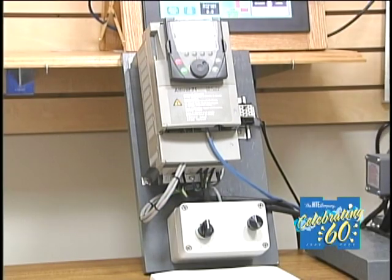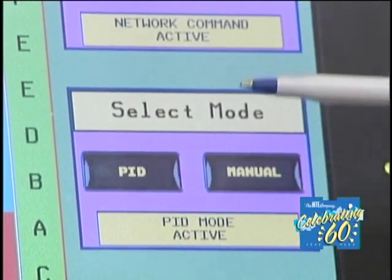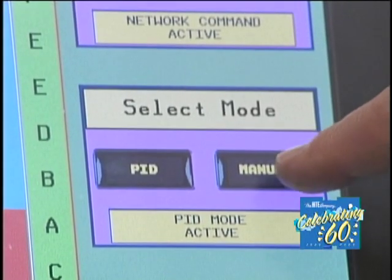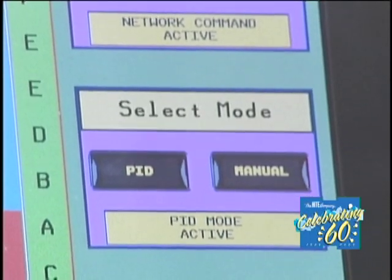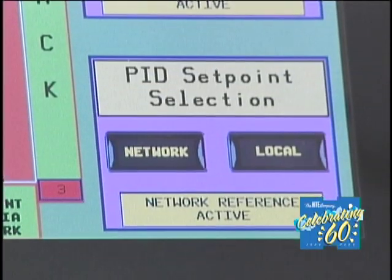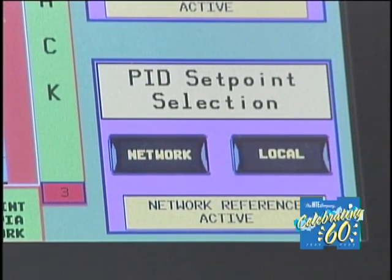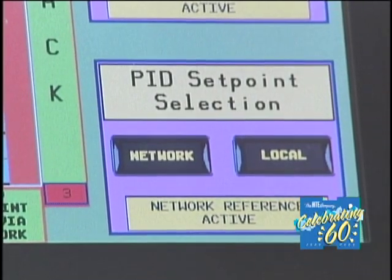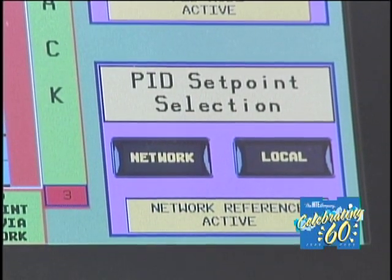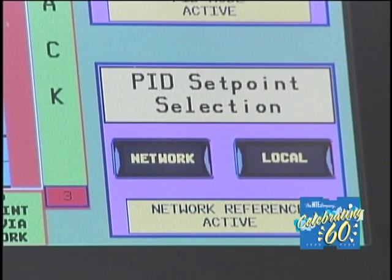We'll start out in network. Our mode is either going to be PID or manual. PID means the PI controller in the drive controls the speed of the motor. If we go into manual, that's direct control of the drive output frequency with the speed pot on the local control box. For PID setpoint, on network we use the bar graph on the touchscreen. If we hit local, the speed pot on the local box becomes our setpoint — it sets the setpoint and then the drive controls the motor speed to maintain the bottle in the tube.